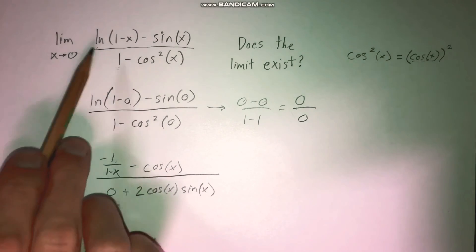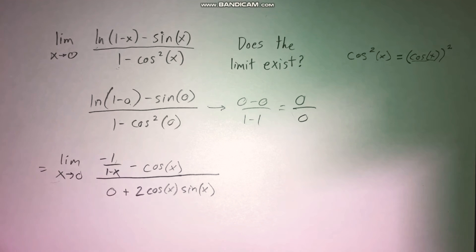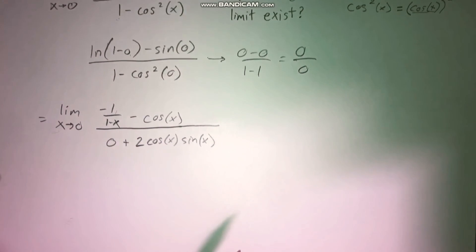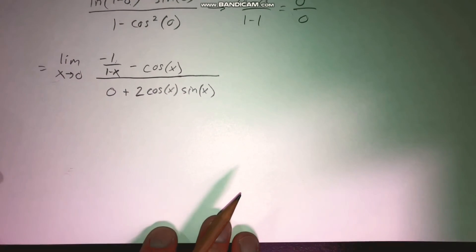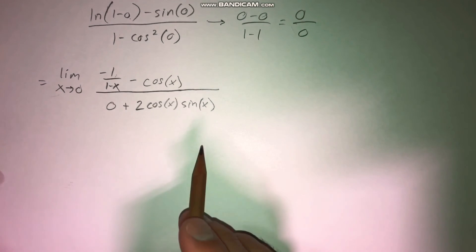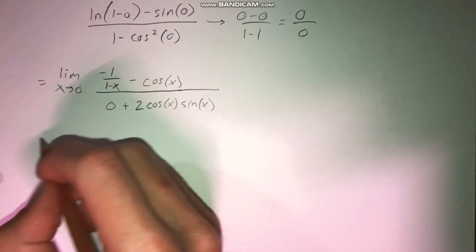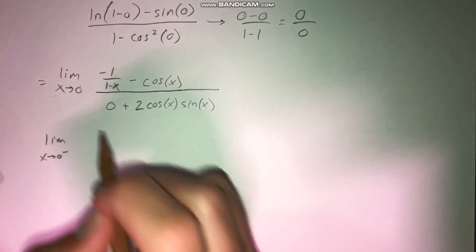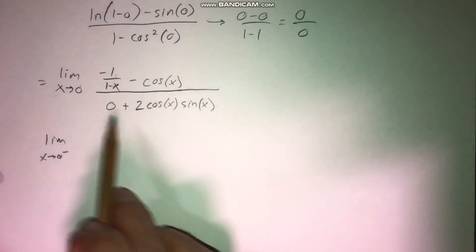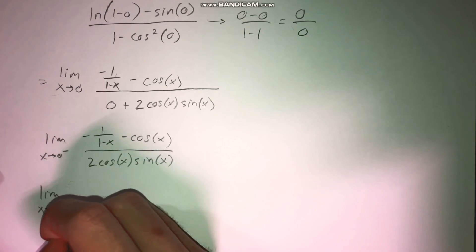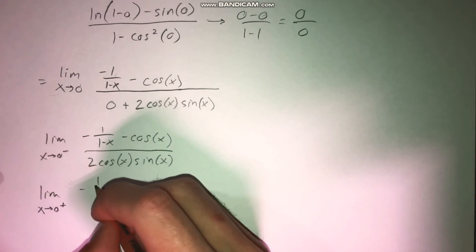So now we know this new limit from L'Hôpital's rule is equivalent to the original limit we started with. What I would actually recommend for evaluating this limit is to think about each one-sided limit separately — the limit as x goes to zero from the left, and the limit as x goes to zero from the right.